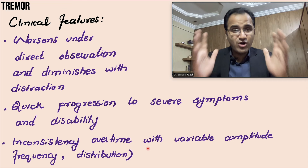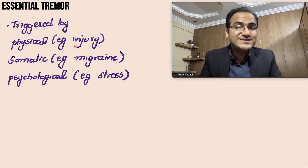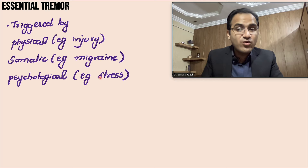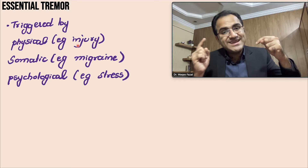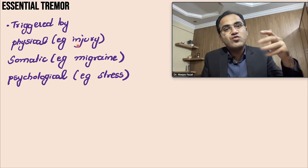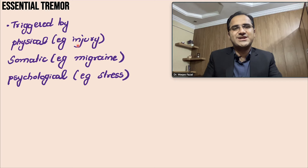Functional tremor is triggered by physical injury, somatic symptoms like migraine or headache, or other illnesses, as well as psychological symptoms like stress. These things are not directly causing the tremor — rather, the injury or illness psychologically affects the patient, and that psychological effect causes worsening of the tremor, even though there is no underlying pathology of the tremor itself.